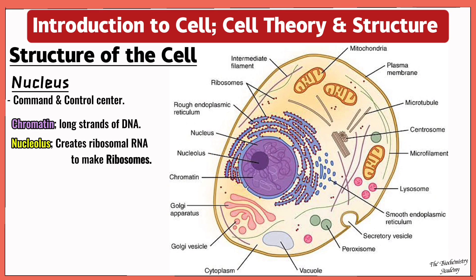The nucleolus functions in creating ribosomal RNA to make ribosomes, and the ribosomes are these little spheres you see here in the cytosol. So these ribosomes, they make proteins. And the way the nucleus makes protein is by sending the mRNA which carries the instruction to the ribosomes, and they make the protein.